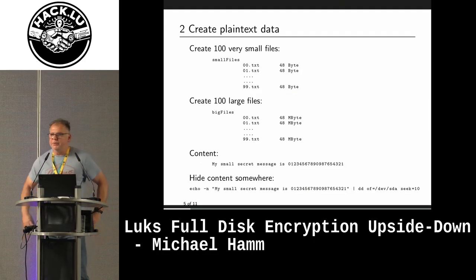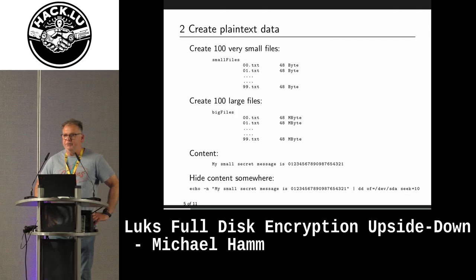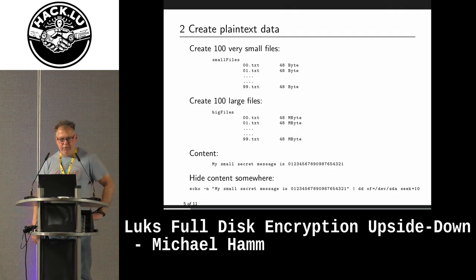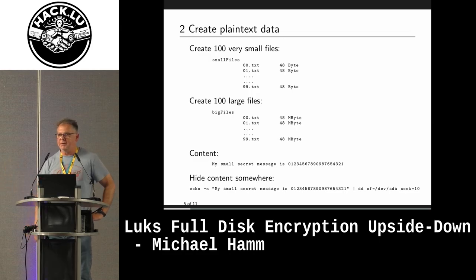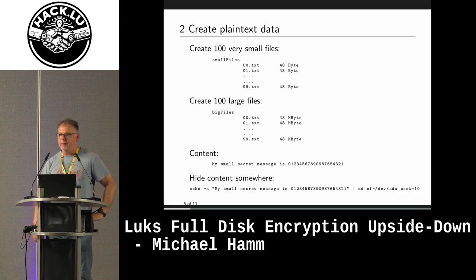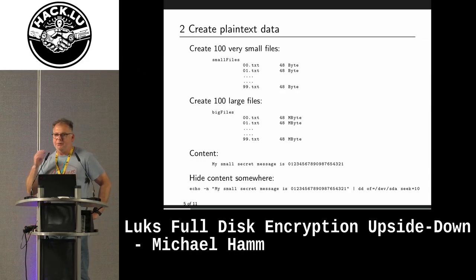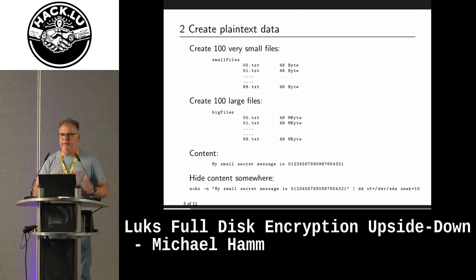To make recovery easy to verify, I created 100 small files of 48 bytes and 100 large files of 48 megabytes. If you know NTFS, you have an idea why I chose two different sizes. I put a small secret message in the small files, and the same content one million times in the big files. As a third item, I put the same message in sector 11.